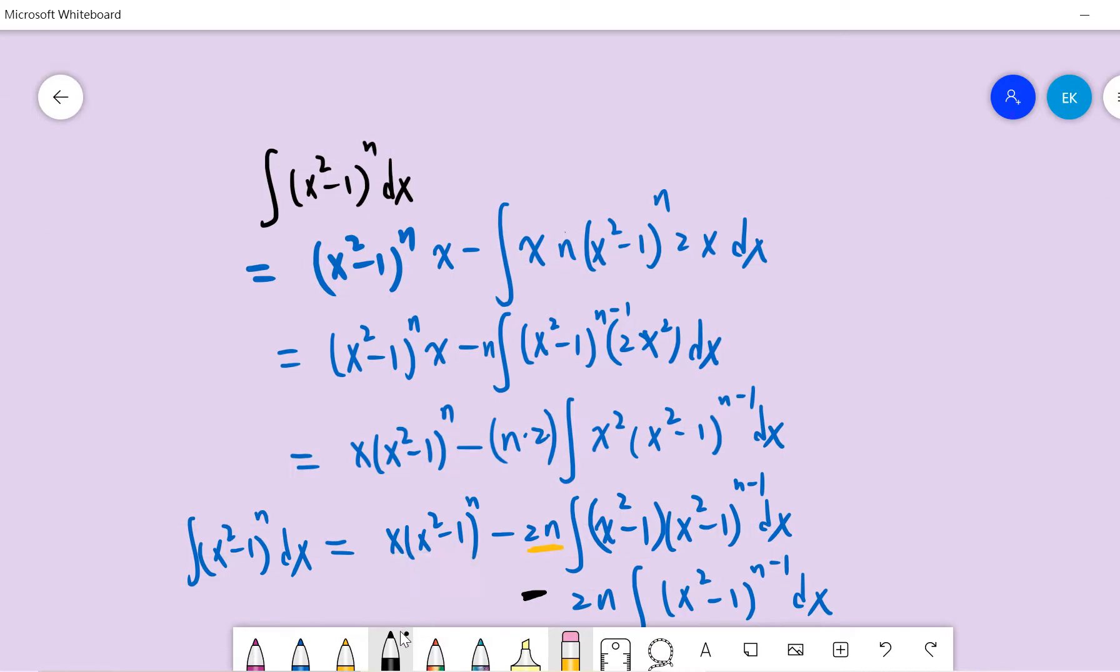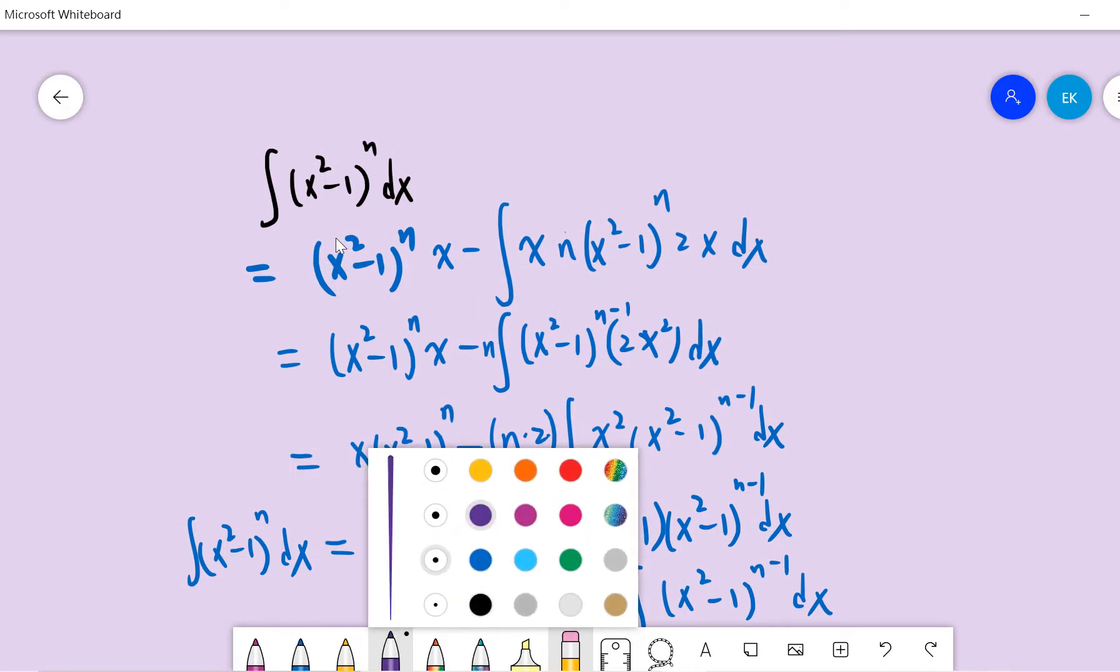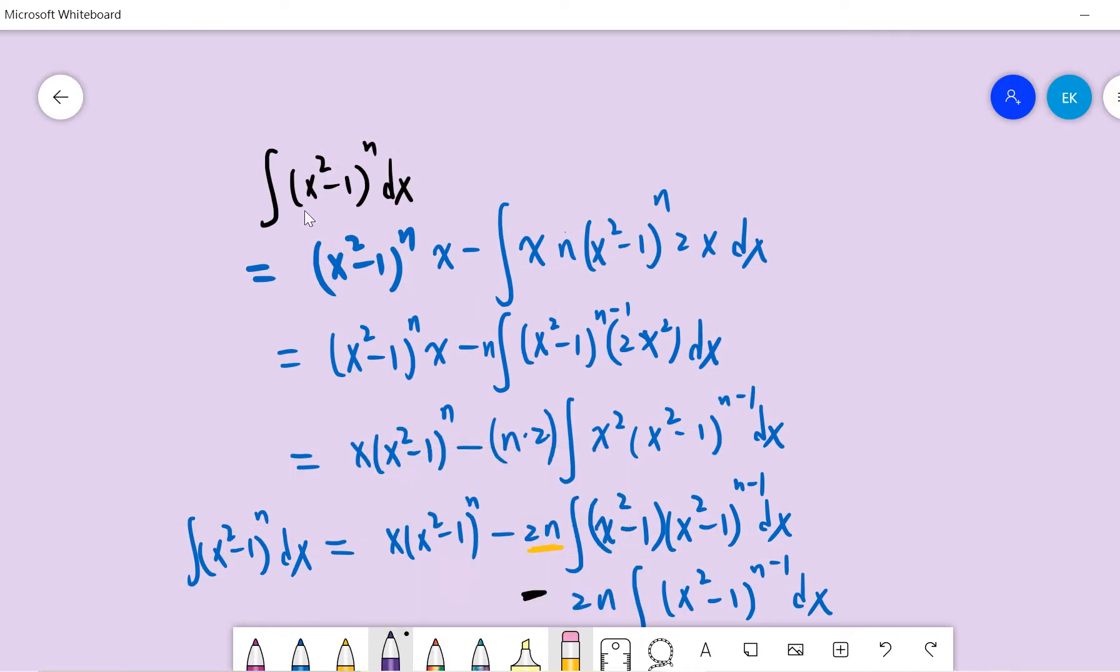So basically it's very easy that we first use integration by parts. So let me remind you guys that integration by part is that f dg equals to fg minus integral g df. So now we get g equals to x and f equals to x squared minus 1 to the power n.